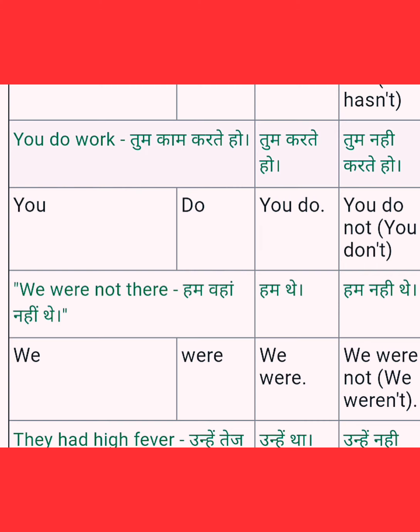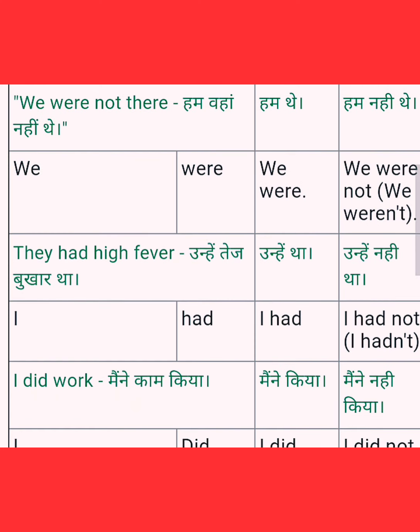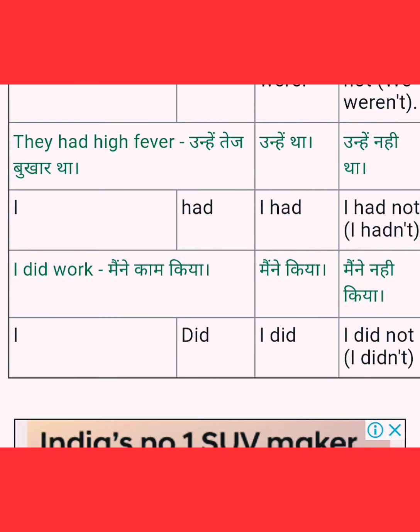Next: 'We were not there' — hum wahan nahi the. The short form of 'were not' is 'weren't'. So: we weren't there. Short answer: no, we weren't.